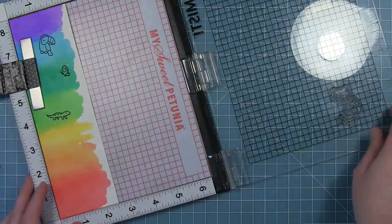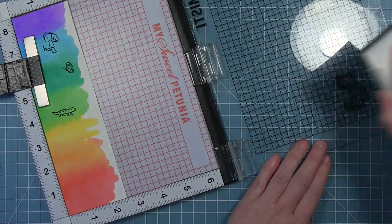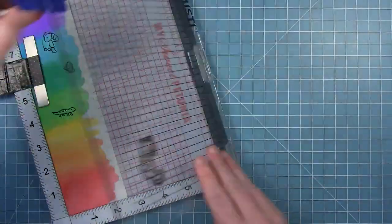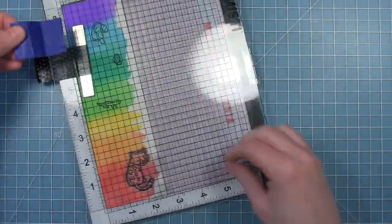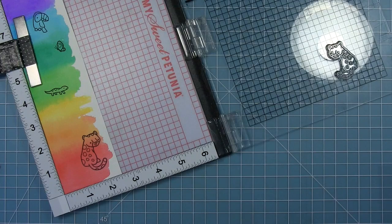Then I'm also going to stamp the little jaguar at the bottom. So I've got the placement for that. I'm just going to stamp her down, and then I'm going to stamp a branch for her to sit on.